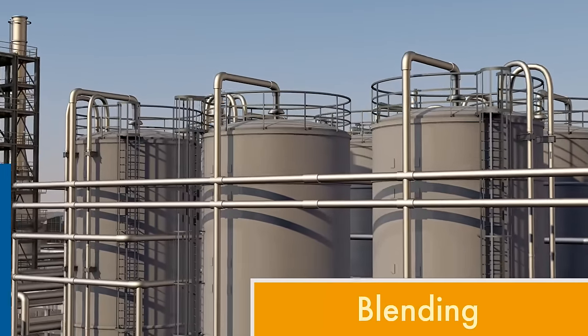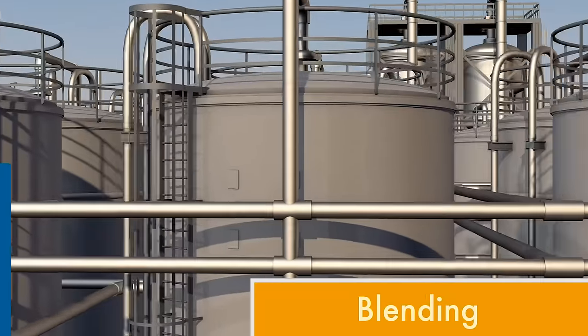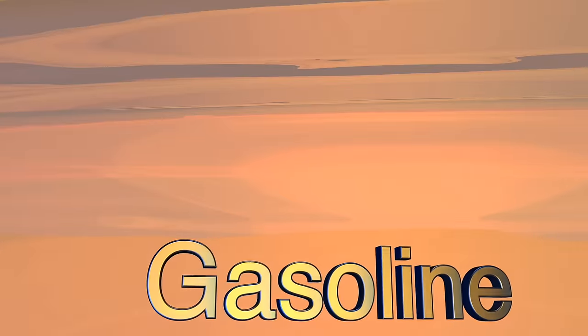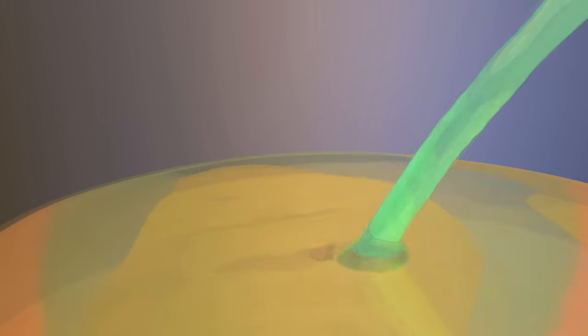Blending is a process of mixing different refinery products to make finished petroleum fuels. Gasoline, for example, is blended to achieve octane standards, creating the grades of gasoline you see at the pump.